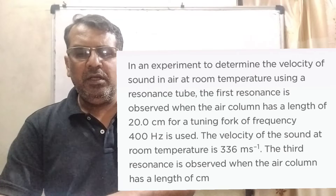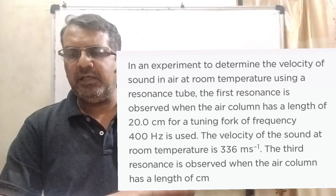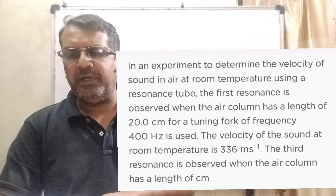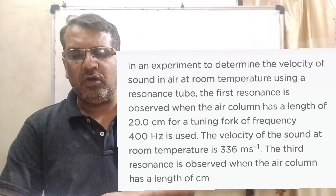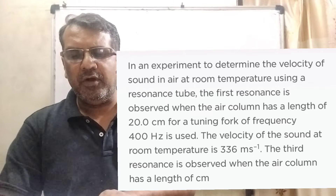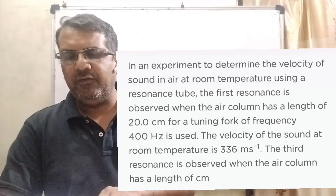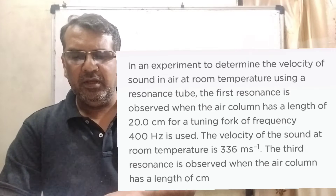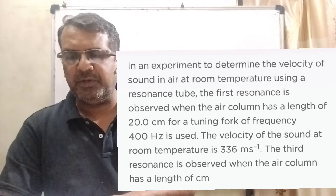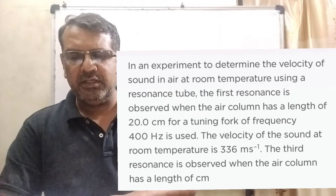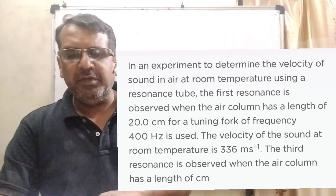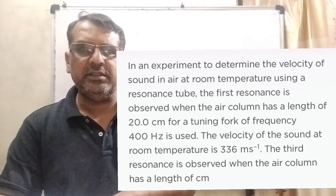Now here is the question. In an experiment to determine the velocity of sound in air at room temperature using a resonance column, resonance is observed when the air column has a length of 20 cm for a tuning fork of frequency 400 Hz. The velocity of sound at room temperature is 336 m/s. We have to find the length of the air column at the third resonance, in centimeters.